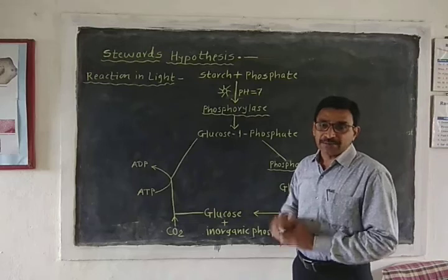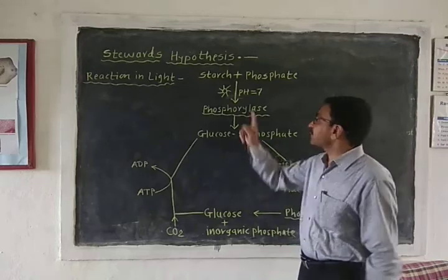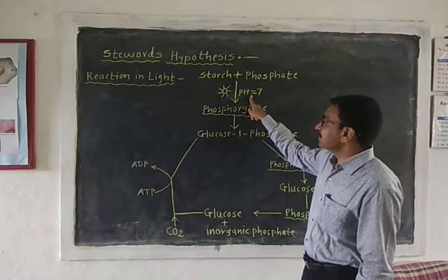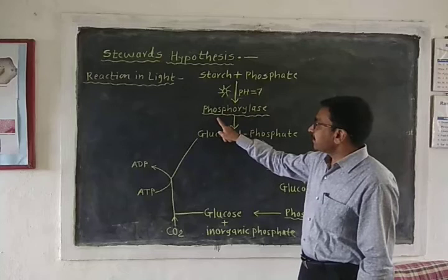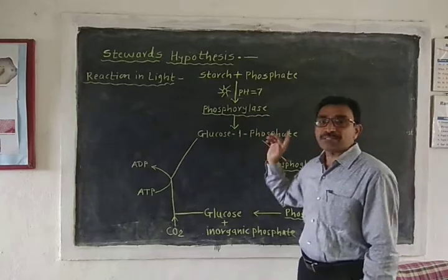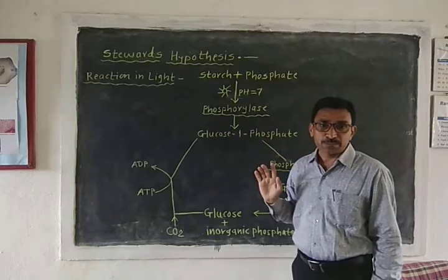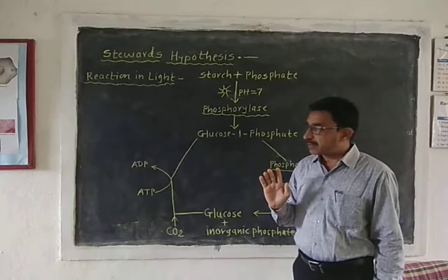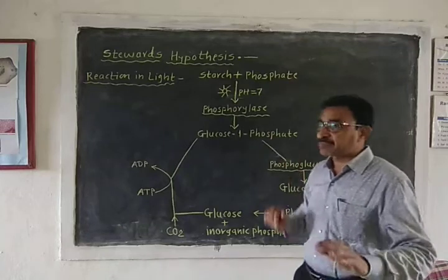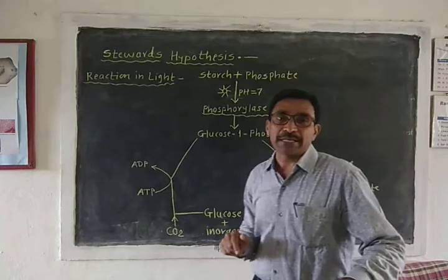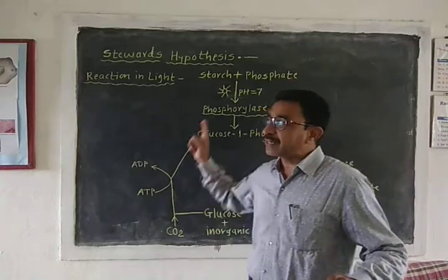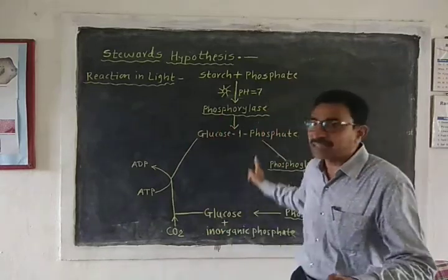When the pH increases up to seven, the enzyme phosphorylase becomes active.